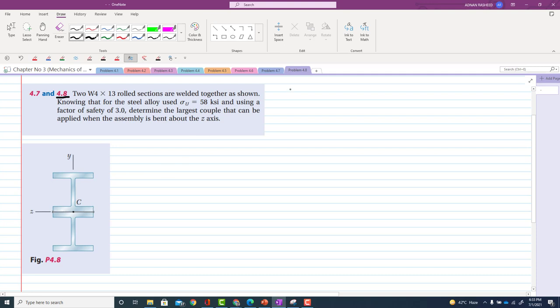The given data is the same: W4 by 13 wide flange beam with ultimate tensile strength of 58 ksi and factor of safety of 3. You have to find the moment about the z-axis, Mz.